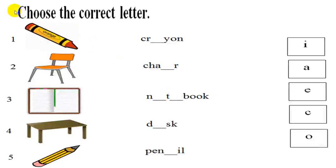Exercise 3. Choose the correct letter. One. What's this? It's a crayon. So we choose AY. And we write AY here. Crayon. Ok. The others, you do it the same.